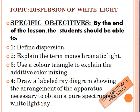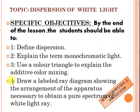Let's look at our specific objectives. By the end of the lesson, students, you should be able to: 1. Define dispersion. 2. Explain the term monochromatic light. 3. Use a color triangle to explain additive color mixing. 4. Draw a labeled ray diagram showing the arrangement of apparatus necessary to obtain a pure spectrum of white light.